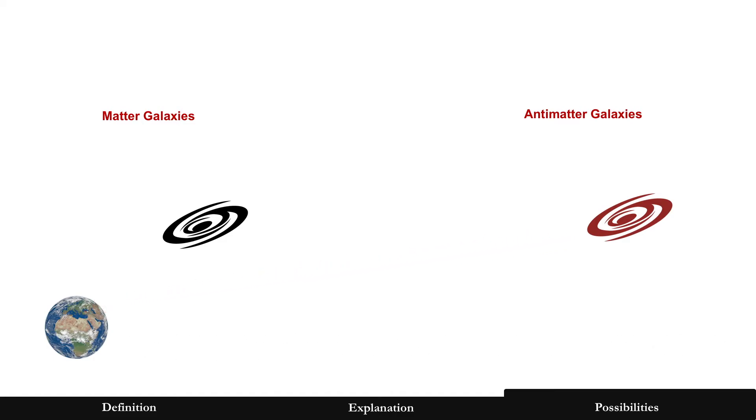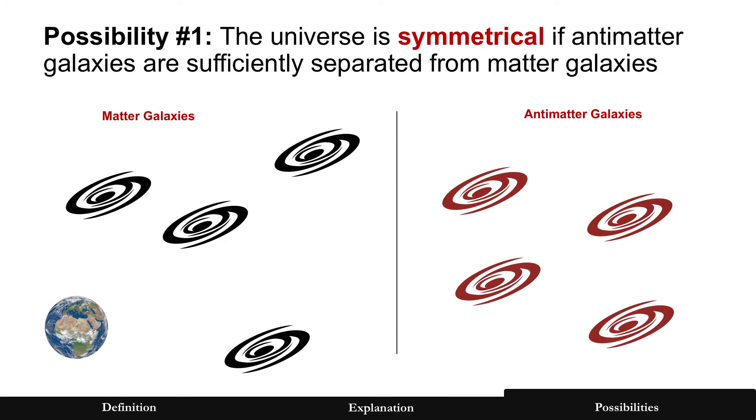We actually wouldn't know it unless a matter galaxy and an antimatter galaxy combined, and they would annihilate. Then we would detect it. But of course, if they're standalone, we wouldn't know. And so that does leave the possibility that the universe is symmetrical, but really only if the antimatter galaxies are sufficiently separated from matter galaxies. Again, if they were close, we would certainly know as they annihilated. That's possibility number one.